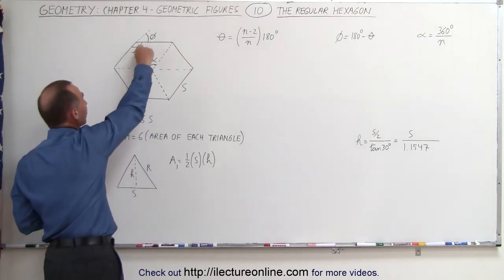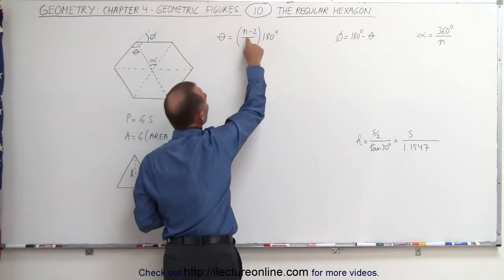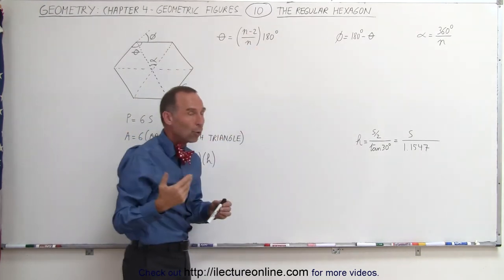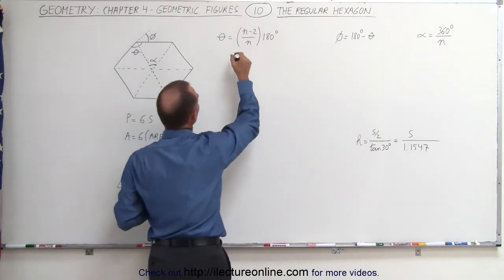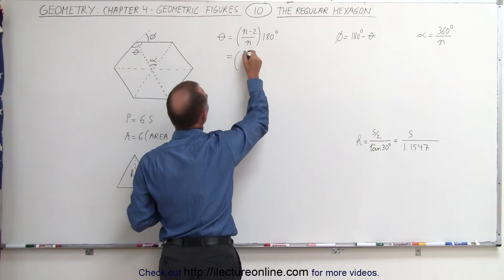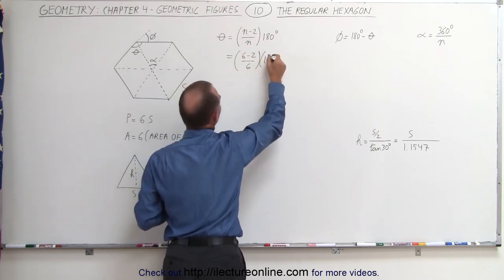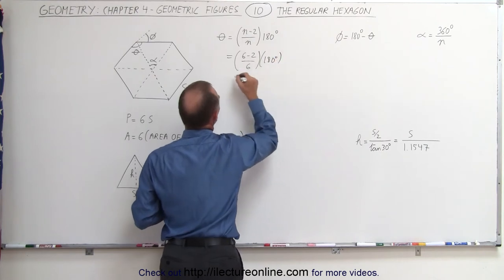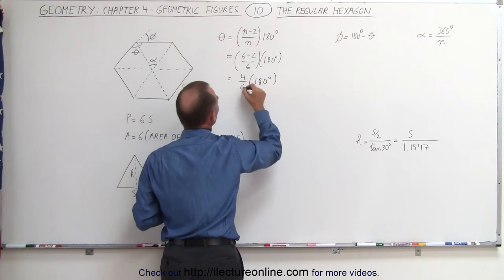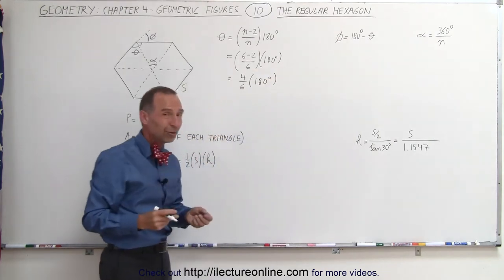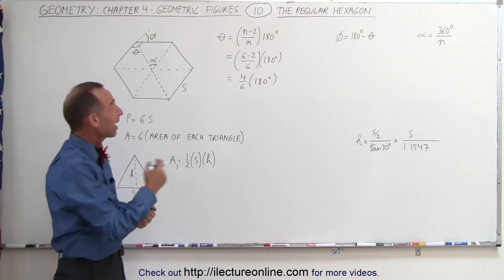So first, let's find the interior angle theta. It's going to be equal to n minus 2 divided by n, just like for any regular polygon. And to do that, this is equal to, in this case, 6 minus 2 divided by 6 times 180 degrees, which is equal to 4 divided by 6 times 180 degrees, which is basically 2 divided by 3. So we take 180 degrees divided by 3, which is 60 degrees times 2, that is equal to 120 degrees.